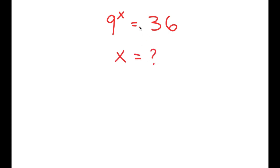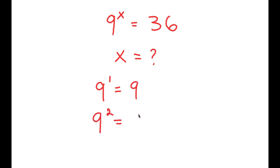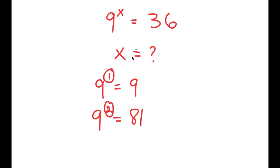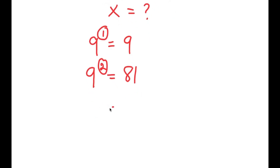We can already tell that x is not going to be a whole number, because 9 to the power of 1 is 9, and 9 to the power of 2 is 81. So we know that x is going to be somewhere in between 1 and 2, and we want to find the exact value of x.